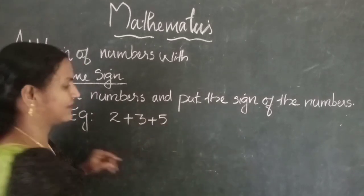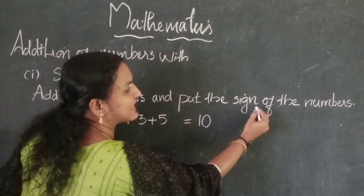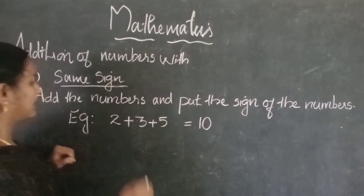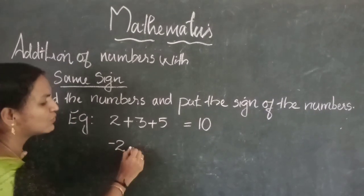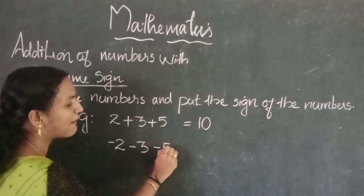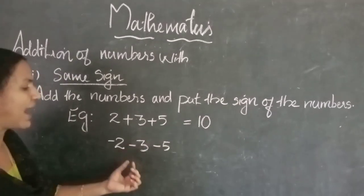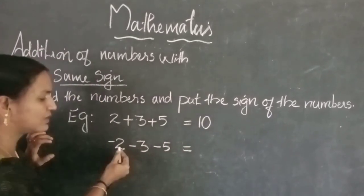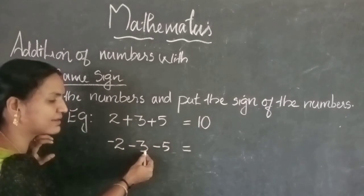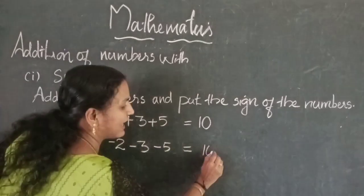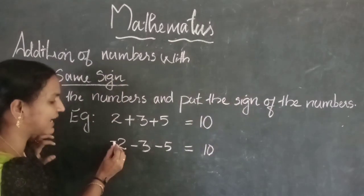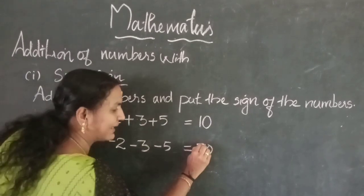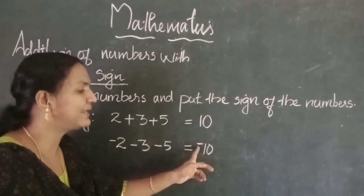5 plus 5 is 10, so the answer is 10. The sign is positive, so the answer is plus 10. One more example: minus 2, minus 3, and minus 5. Add the numbers: 2 plus 3 plus 5, giving 10, and the sign is minus, so the answer is minus 10.